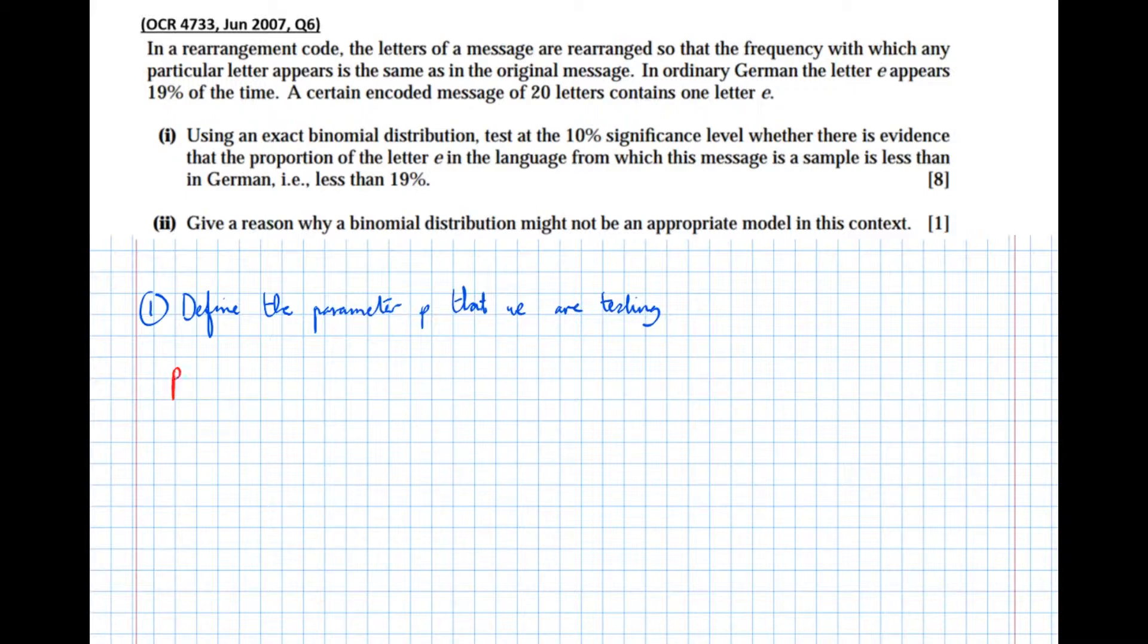So p equals the proportion of the letter e in the sample. So that's how you get your first mark, I'm going to put a tick there, that's our first mark gained.